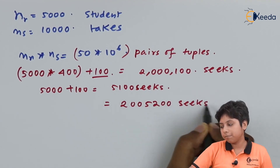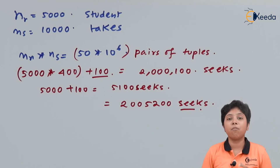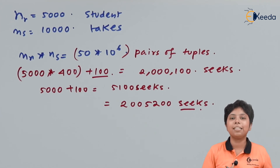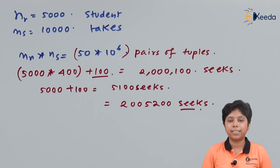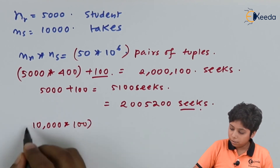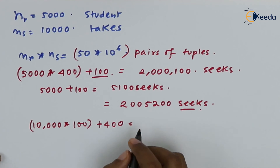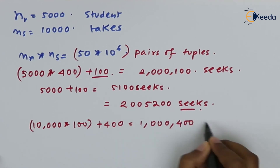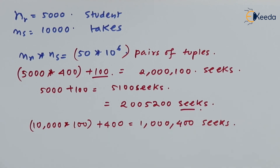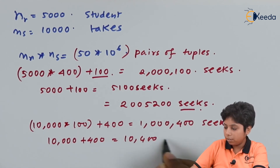In the worst case scenario, where the entire inner relation is in main memory but the outer relation stays on disk, with ns equals 10,000 we need to perform 10,000 times 200 plus 400 blocks for the outer relation.